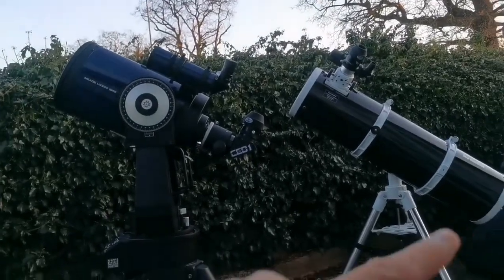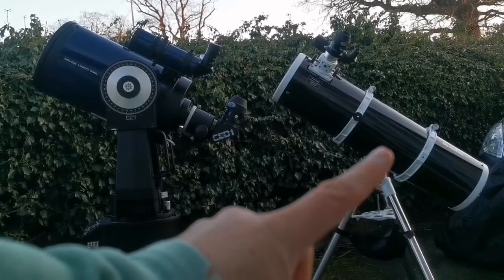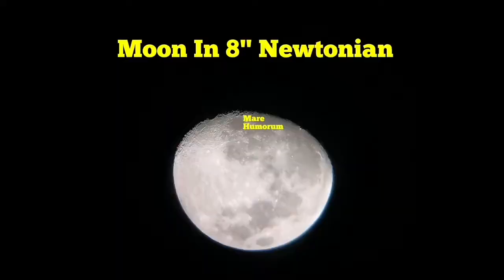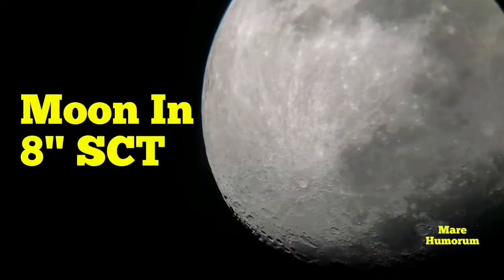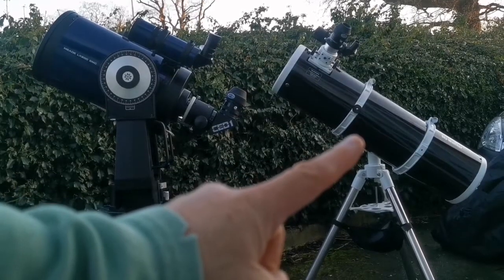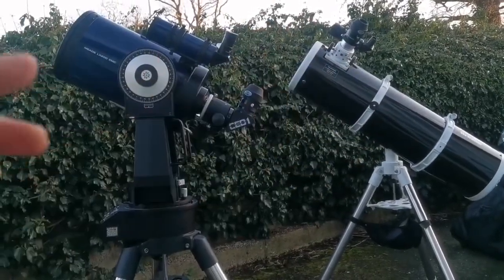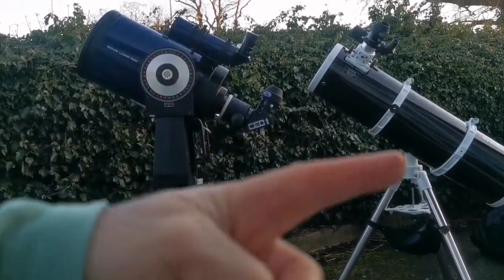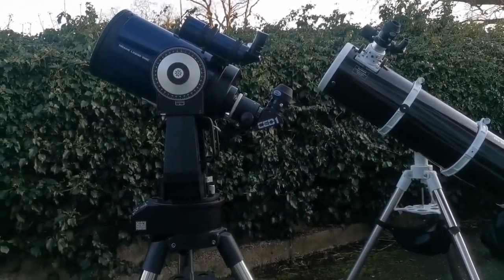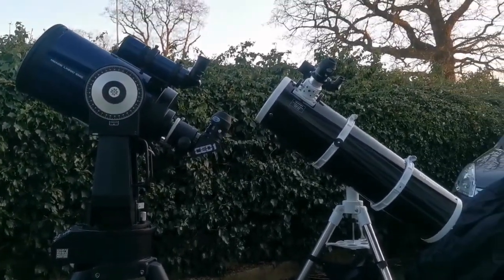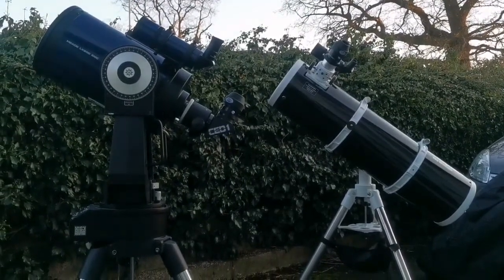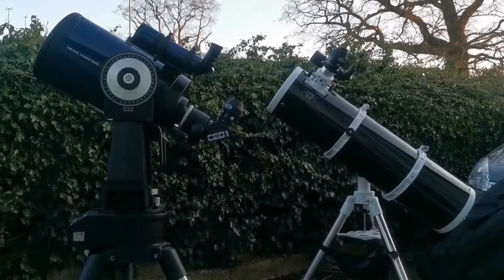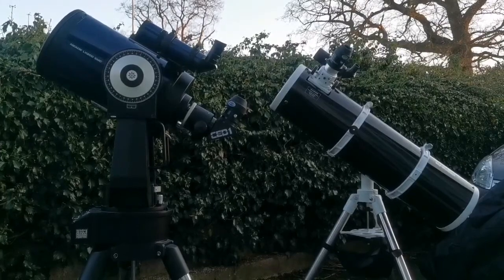Another thing that may confuse you: the image orientation differs between the two telescopes. The Schmidt-Cassegrain reverses the image compared to normal viewing. The Newtonian also flips the image via its mirror. So when looking at the moon through each telescope, you will see a different orientation and will need to use different star maps to comfortably identify features.